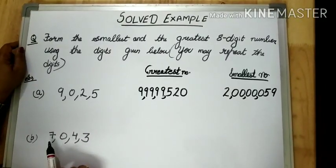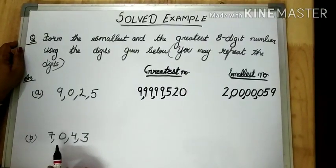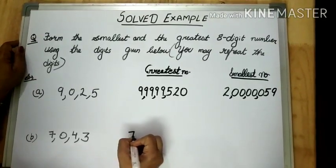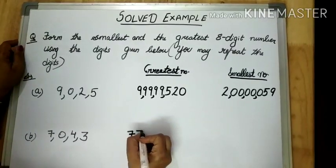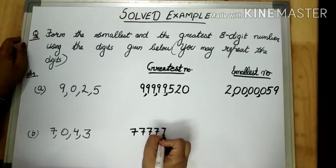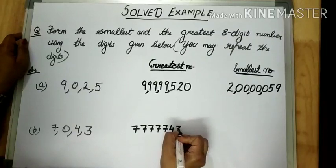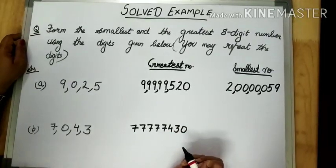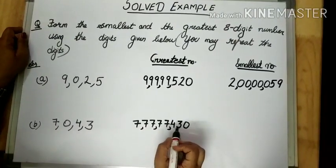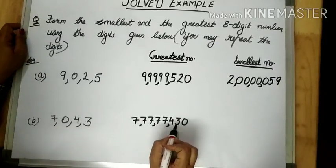So, the digits given are 7, 0, 4, 3. Now, in order to form the greatest number, which is the highest digit here? The highest digit is 7. So we will repeat 7 — how many times? We are going to repeat it 5 times. Now, which is the next highest digit? That is 4. And then we put 3. And then the last, smallest digit, that is 0. Now insert the commas. Does it form an 8-digit number? The number formed is 7 crore 77,77,430.